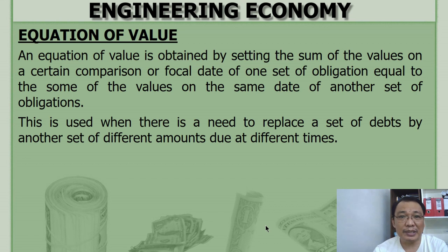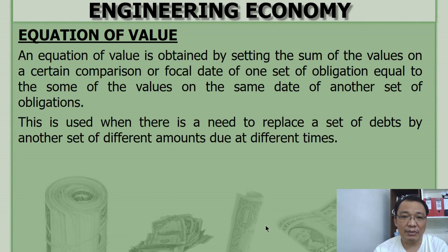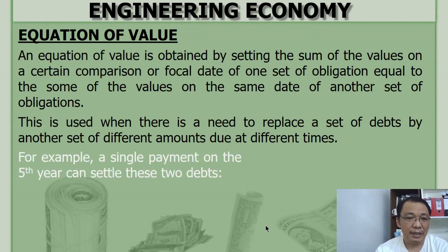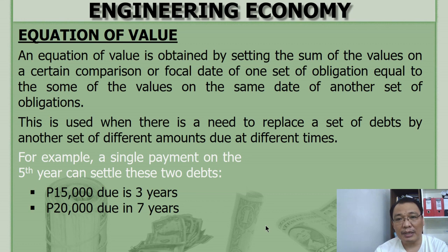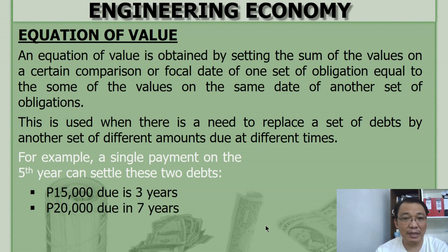In mechanics, a system of several forces can be replaced by a single force having the same effect. Similarly, in the equation of value, a single payment on the fifth year can settle two debts — for example, 15,000 pesos due in three years and another payment of 20,000 due in seven years. Instead of two payments, you can replace them by a single payment on the fifth year.